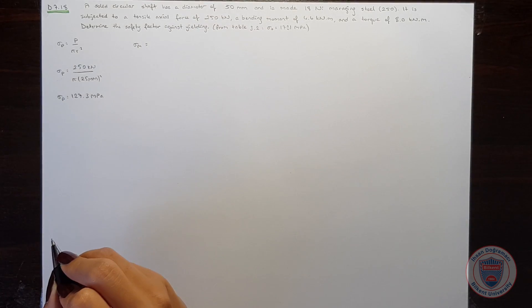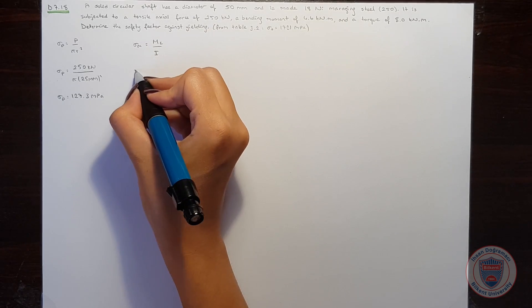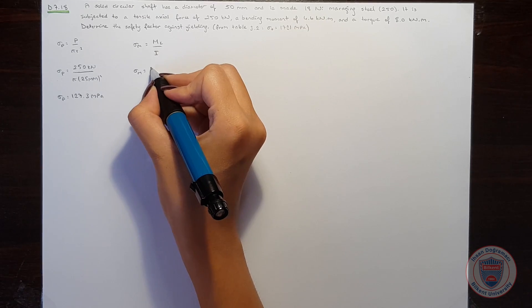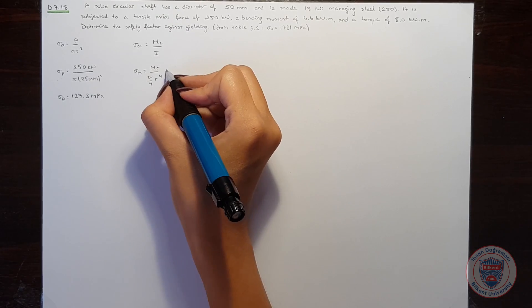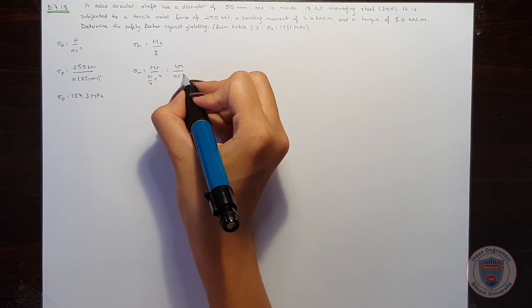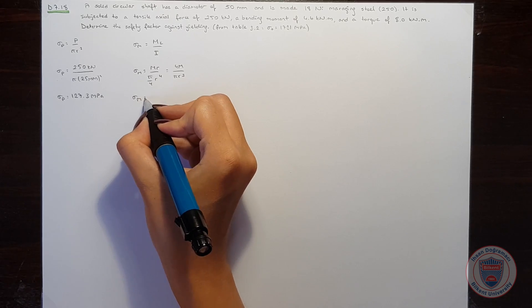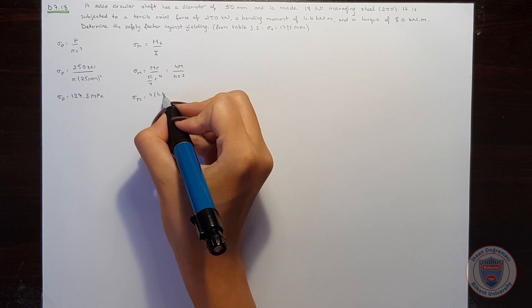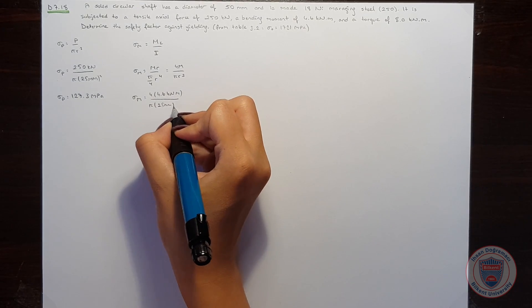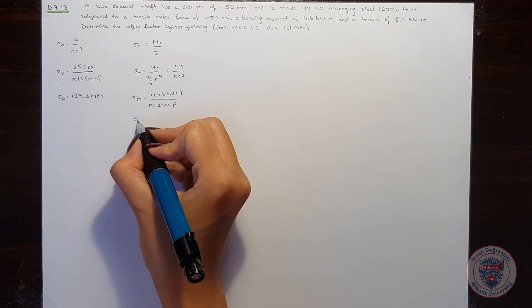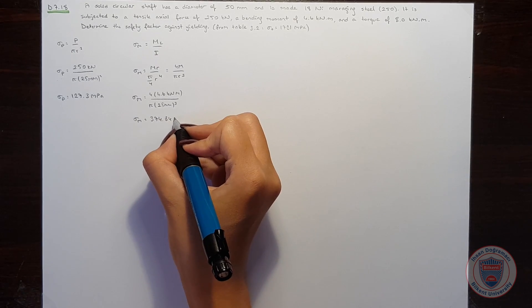Stress caused by the bending moment will be mc over i. And we can say that sigma m will be equal to m times r over pi over 4 times r to the power of 4, which is 4m over pi r cube. Let's again substitute the values. And we will have sigma m is equal to 374.84 MPa.